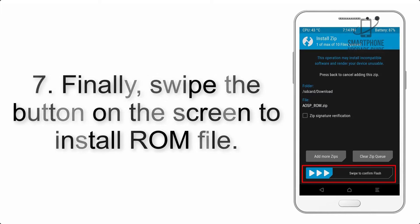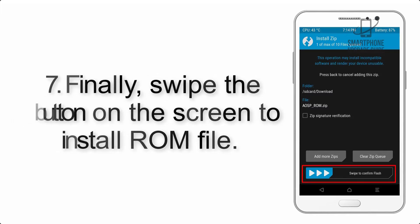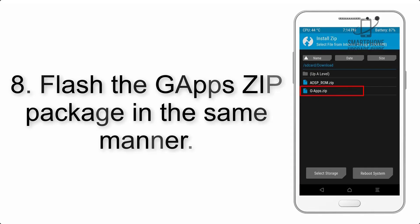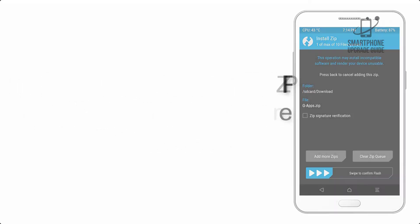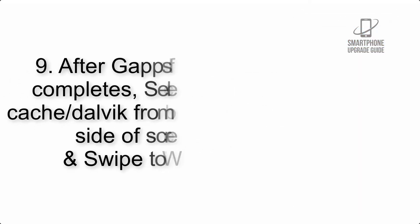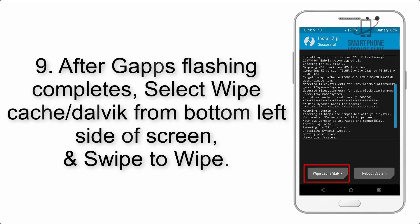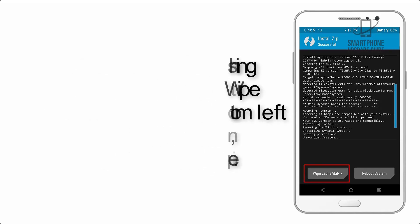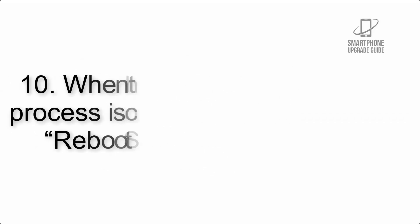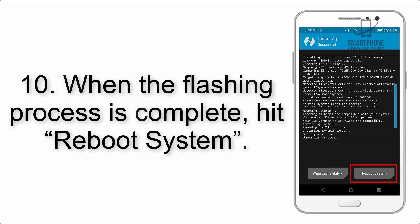Step 8: Flash the GApps zip package in the same manner. Step 9: After GApps flashing completes, select Wipe Cache and Dalvik from the bottom left side of the screen and swipe to wipe.